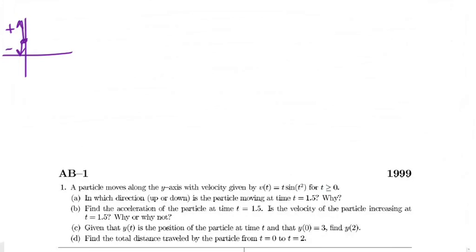I say calculator because, since this is problem number 1, it's a number 1 FRQ. Number 1 and 2 are calculator problems on the AP exam. Let's go ahead and do this. Instead of doing 1.5, I'm going to do 3 over 2 — I like fractions better than decimals.